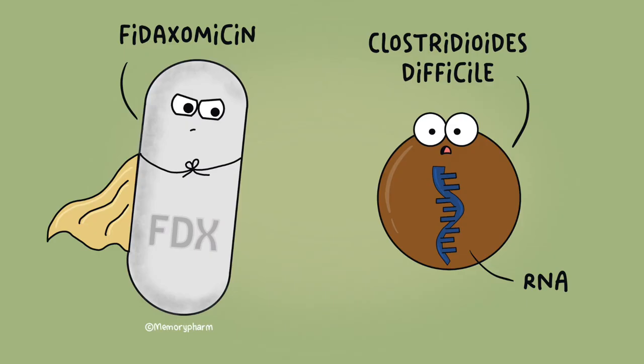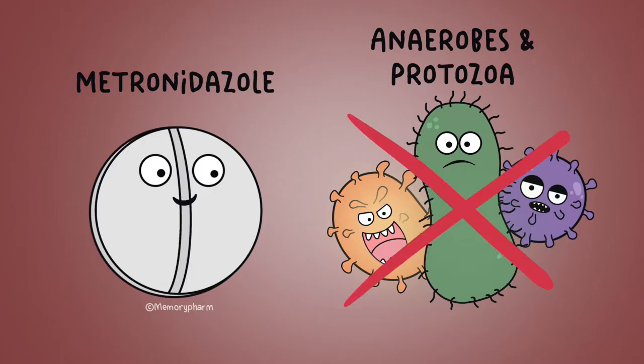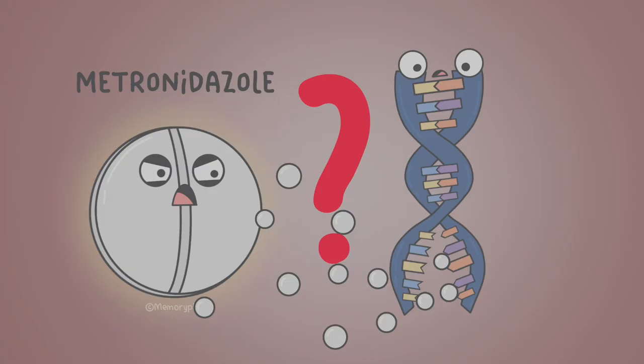Fidaxomycin works specifically on a bacteria called C. difficile. It inhibits RNA polymerases, making it useful for treating only that bacterium. Metronidazole targets only anaerobic bacteria, like Bacteroides species, and protozoa like Giardia. It may be metabolized into a molecule that disrupts DNA and inhibits its synthesis, but we don't really know how it works for sure.